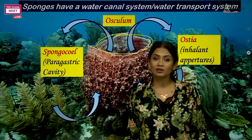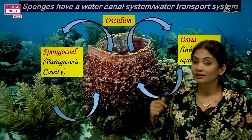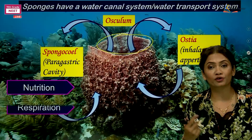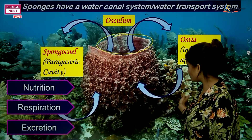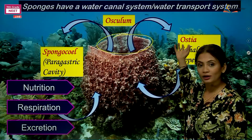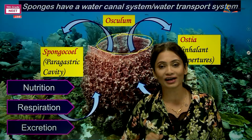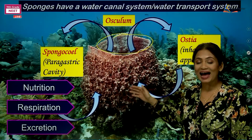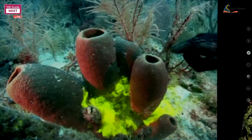Why does the sponge have this water canal system? Since it allows a current of water to pass through, it helps in so many ways - it helps in nutrition, respiration, and excretion. Water comes in, special cells inside utilize nutrients from the water, and the rest is thrown out. If water carries out waste, that is excretion. So the water canal system helps in nutrition, respiration, and excretion of the poriferan.